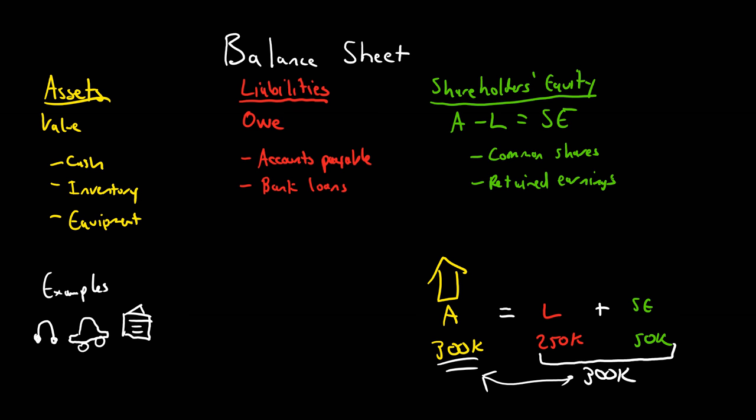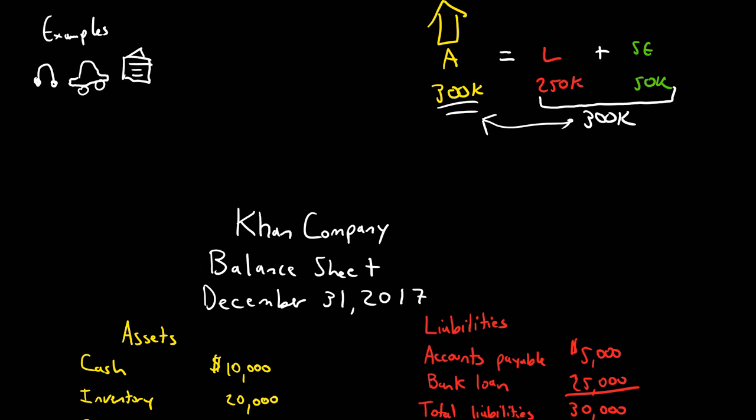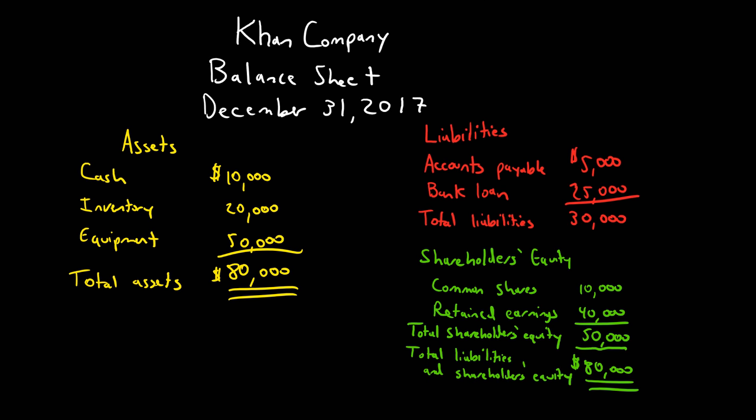So, let's have a look at a sample balance sheet. So, here we have the assets listed on the left. Nothing new here. Cash, inventory, and equipment. The total assets there are $80,000. On the right, we've got our liabilities of $30,000. And our shareholder's equity here, the total is $50,000.